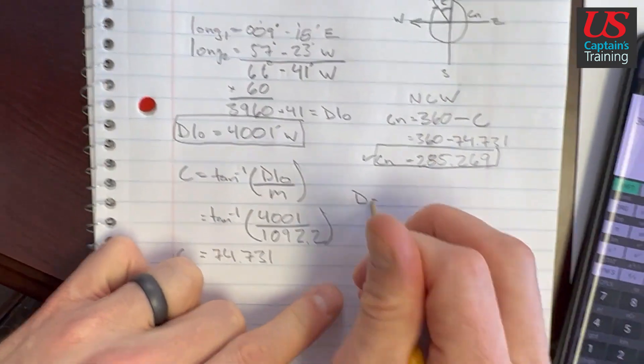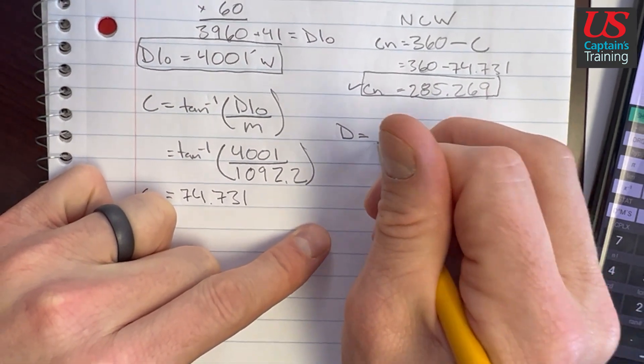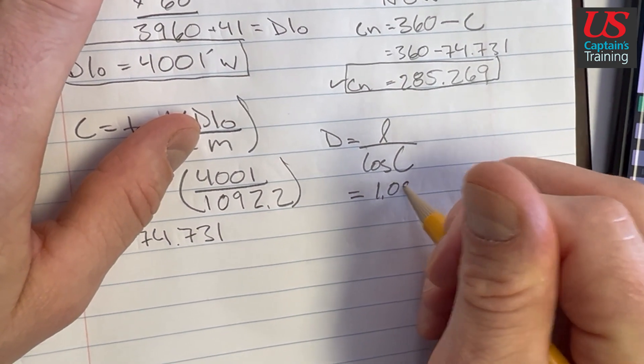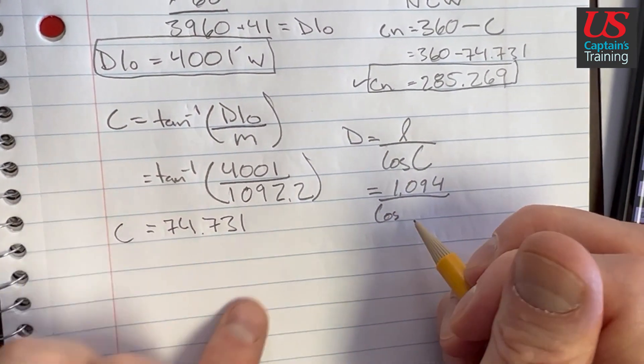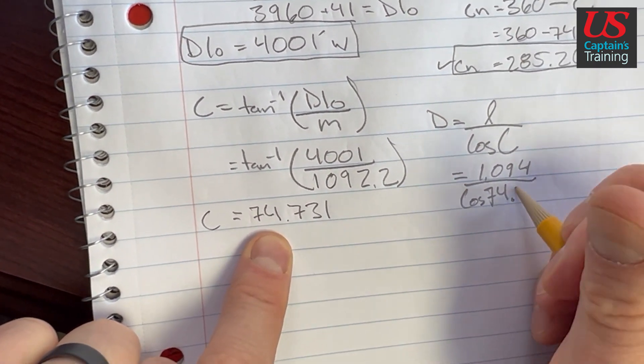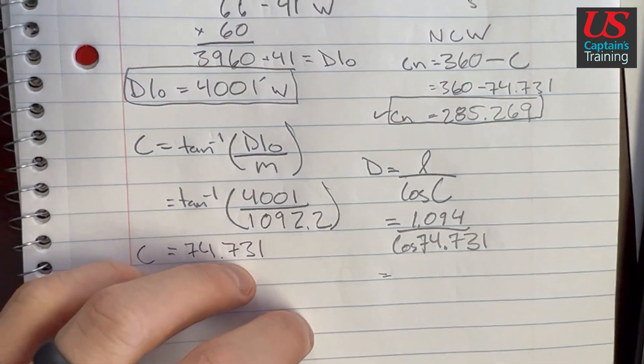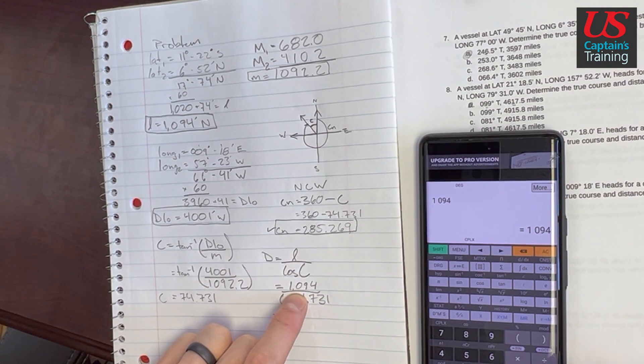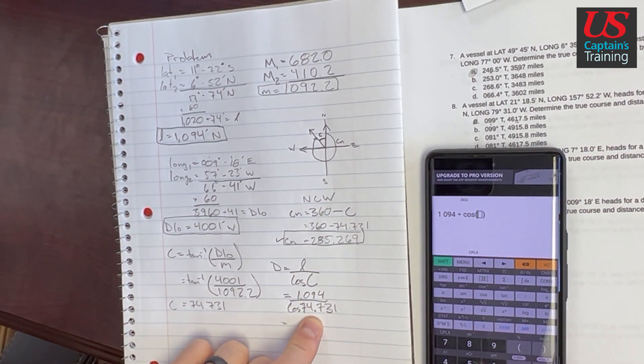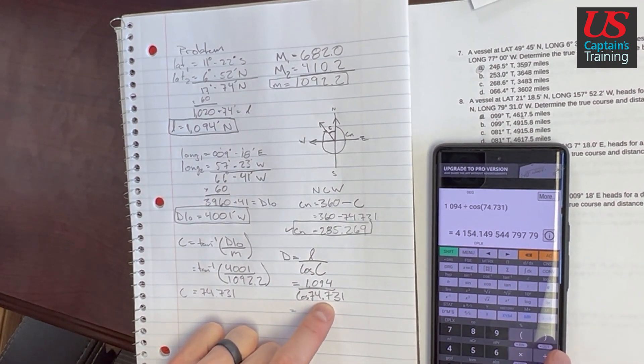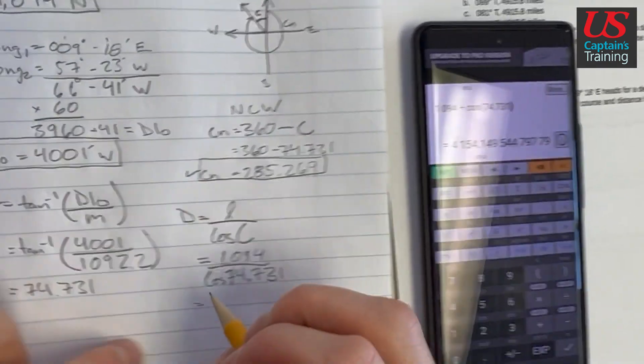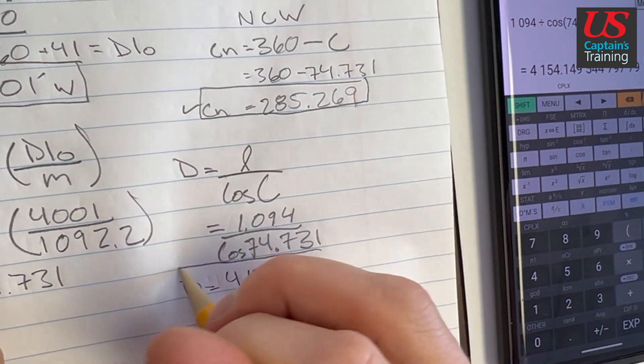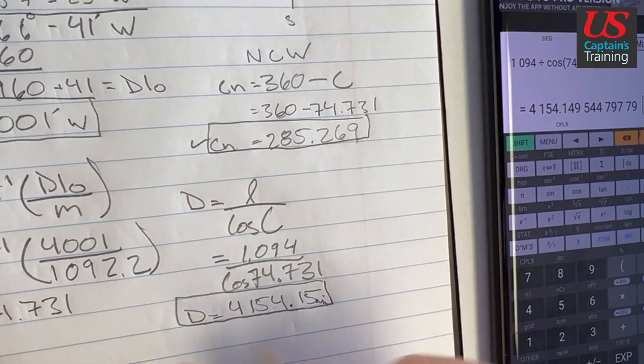Now let's figure out our distance. That's the last piece. And distance is equal to little L over cosine C. So little L is equal up here 1,094 over the cosine of 74.731. Here we go, it's going to equal, so little L, 1,094 divided by the cosine of 74.731 equals 4,154.15. This is going to be one of the answers.